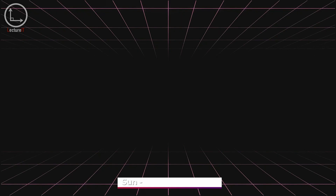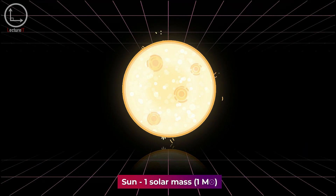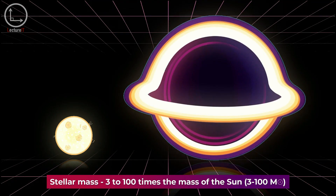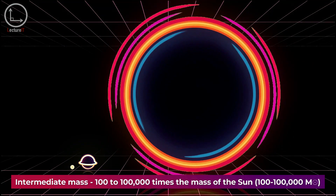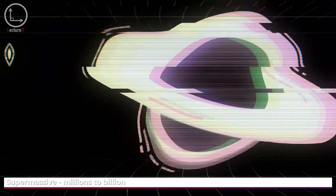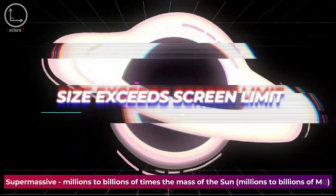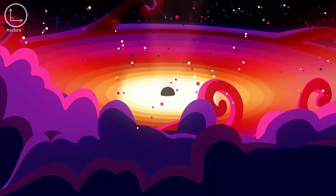Depending on the mass of the original star, black holes come in three varieties: stellar mass, intermediate mass, and supermassive. These monstrous entities often lurk at the center of galaxies, acting as anchors holding them together.